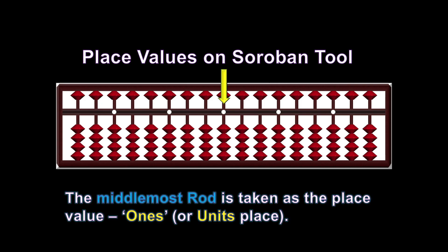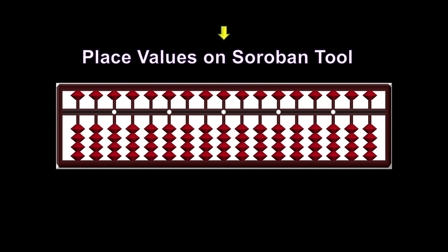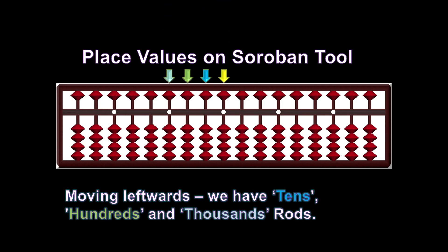The middlemost rod is taken as the place value ones or units place. Moving leftwards, we have tens, hundreds, and thousands rods.